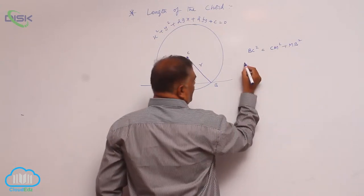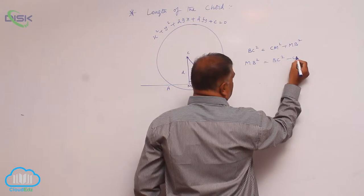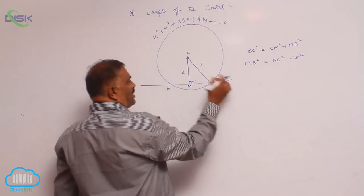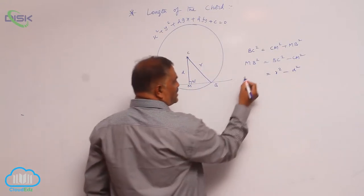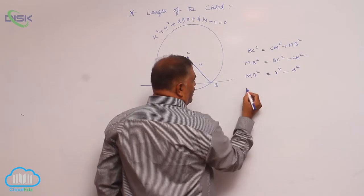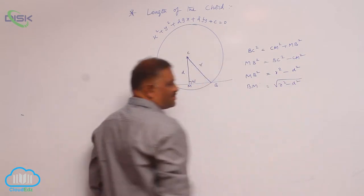Now we require MB square value. That is BC square minus CM square. BC square is nothing but r square, and that is nothing but CM square or d square. MB square, or BM, is given by square root of r square minus d square.